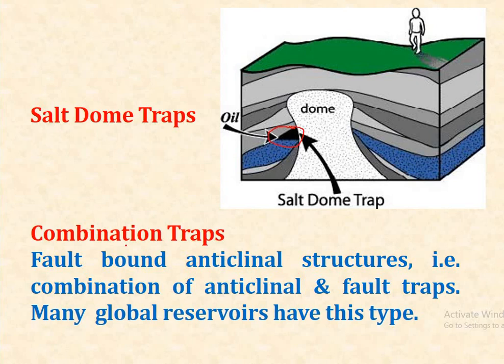Combination traps are fault-bound anticlinal structures — a combination of anticlinal and fault traps. Many global reservoirs are of this type. This concludes the discussion on migration and accumulation of oil.